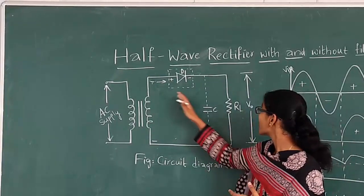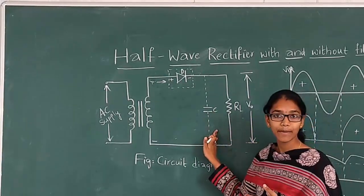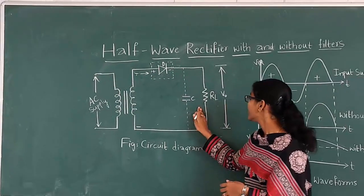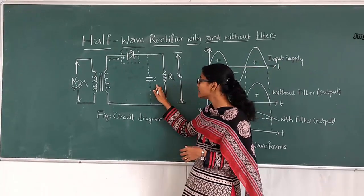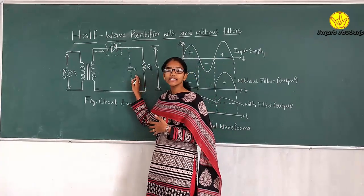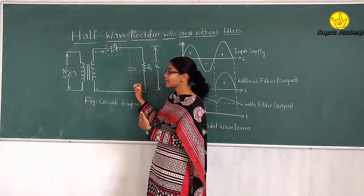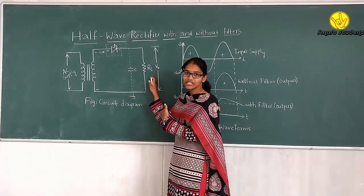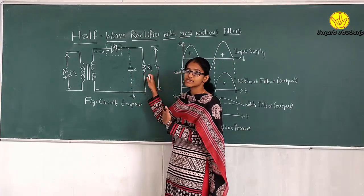All the AC components from the rectifiers are given to this capacitor filter. It is connected across the load resistance. When the positive half cycle is given to the capacitor, all the AC components are taken by the capacitor and are grounded. All the DC components appear directly across the load resistor.